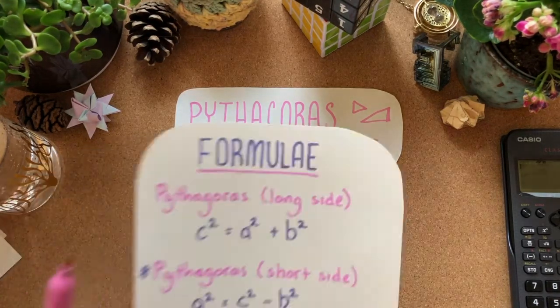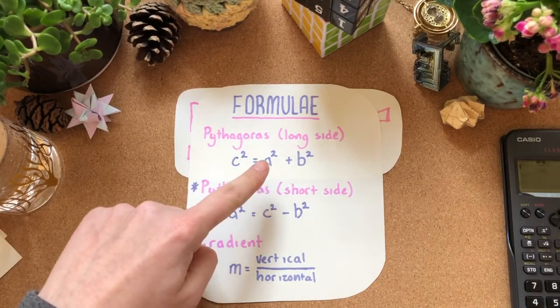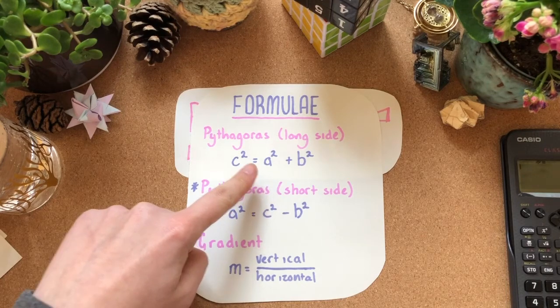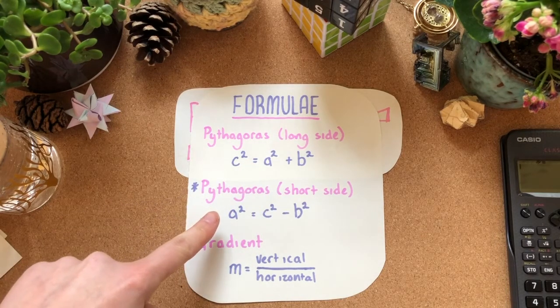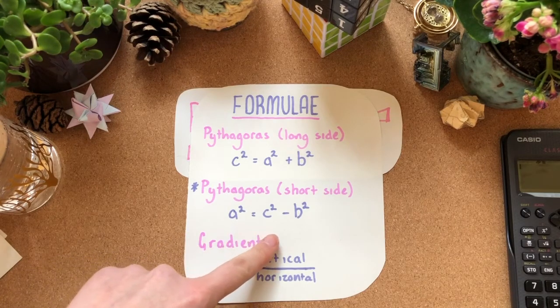The formulas that we'll need. So for Pythagoras the formula we need is c squared equals a squared plus b squared. This one will be on the formula sheet. If you're trying to find a short side you also need a squared is equal to c squared minus b squared.